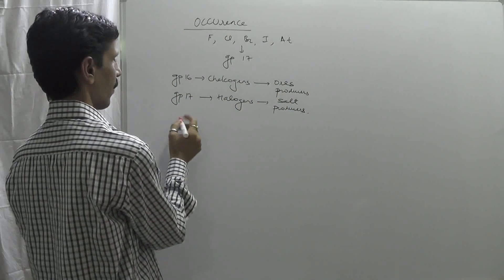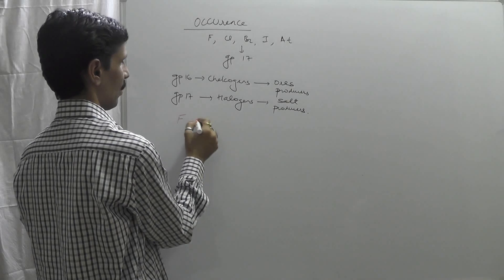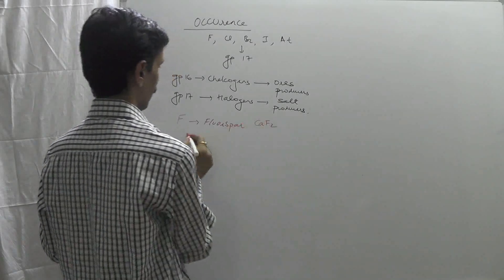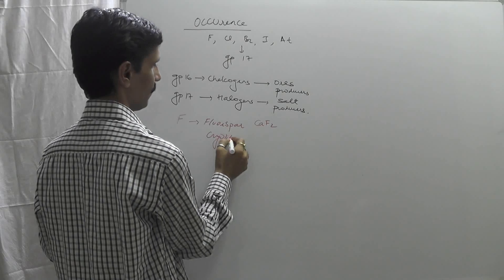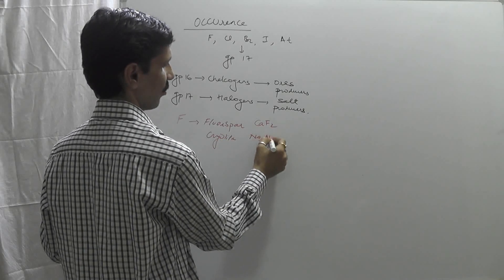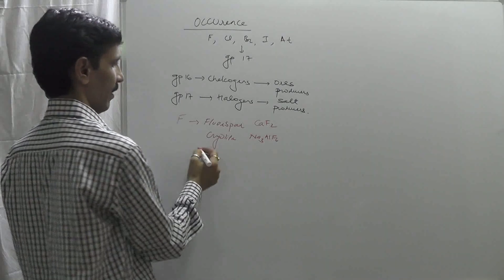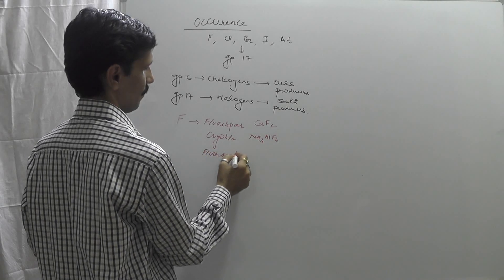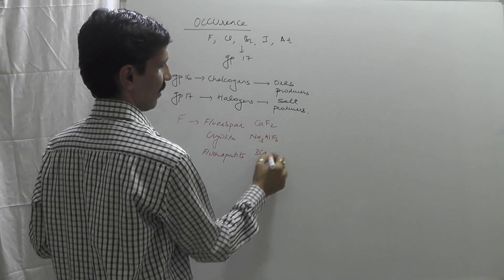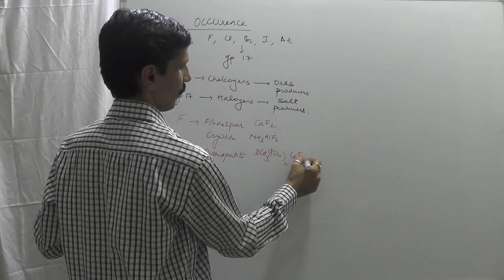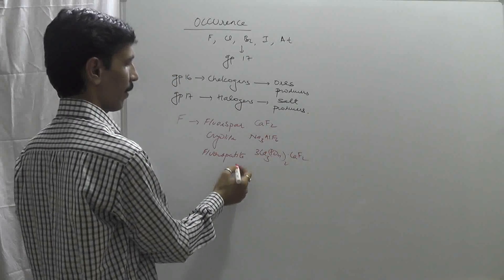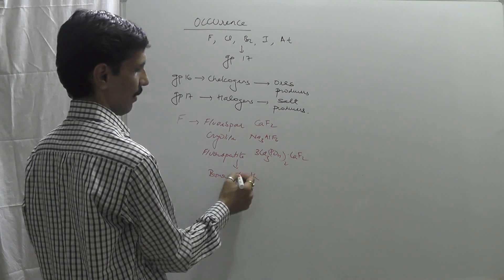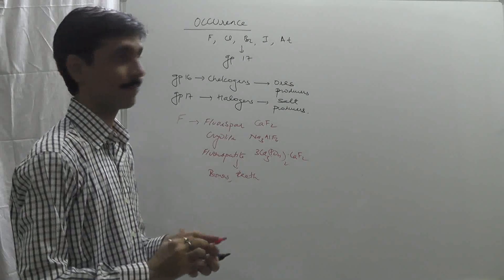When we talk about fluorine, it can be in the form of fluorspar (CaF2), cryolite (Na3AlF6), and fluorapatite (Ca3(PO4)2·CaF2). Fluorine is also present in the form of bones and teeth of organisms.